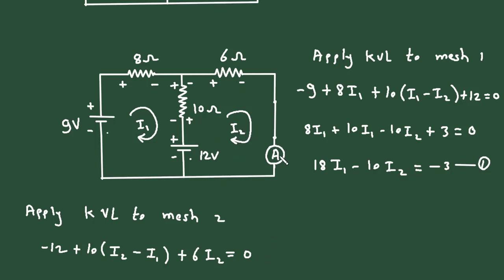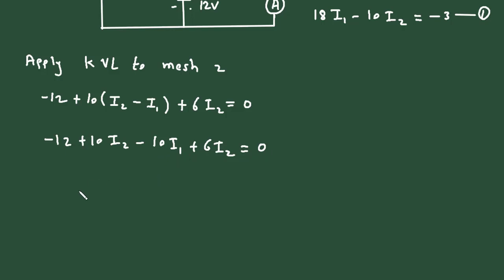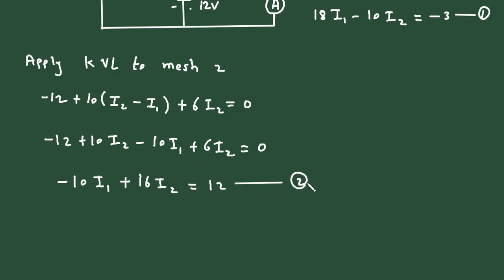Now, this I2 current will be the ammeter current, so we have to find I2. Simplifying: minus 12 plus 10I2 minus 10I1 plus 6I2 equals 0, giving minus 10I1 plus 16I2 equals 12. Let's call this equation number 2.